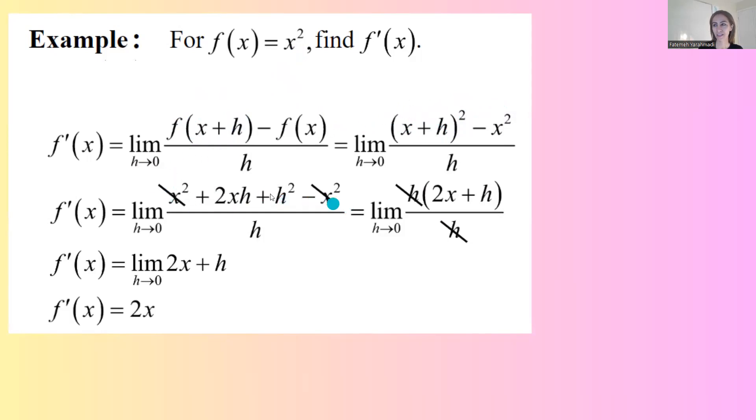Write x plus h in expanded form, and then simplify because you have opposite terms. Then you can factor out h and simplify h as well. You end up with 2x plus h as h goes to 0, which is basically 2x.